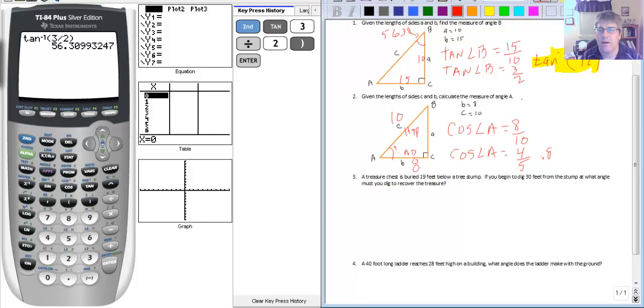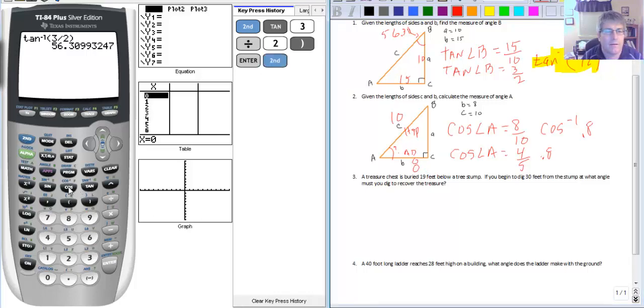So we can go to our calculator and input cosine to the negative 1. We could use the decimal 0.8 or we could use the fraction 4 fifths. So second cosine 0.8.